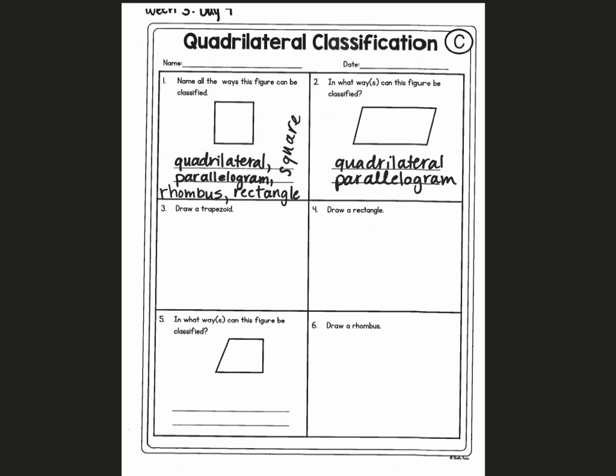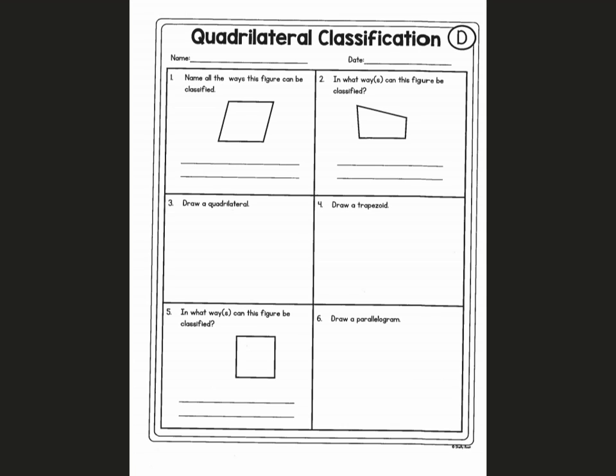The rest of this page is going to be part of your independent practice, but we will do two more on the next page, which is Side D. It's going to say quadrilateral classification at the top. For number one, I'm again going to follow all the same steps that I did on the previous page.